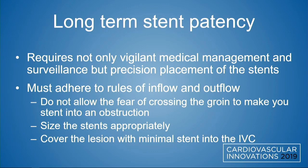If we want to talk about May-Thurner stenting, you really need to understand exactly how to place these stents correctly — how to not jail the other side, how to place them just past the confluence with the newer, stronger stents, without needing to go as far into the inferior vena cava. We're going to be able to match the size of the veins, and that's what's going to lead to long-term patency far more than just managing medical treatment — because even if you didn't put them on any anticoagulation, a lot of these patients would do just fine if the case is done correctly.